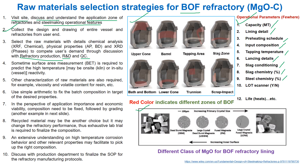Other characterization of raw materials are also required — for example, viscosity and volatile content for resin. Use simple arithmetic to fix the batch composition targeting the desired properties, in the perspective of application importance and economic viability. The composition needs to be fixed, followed by grading.